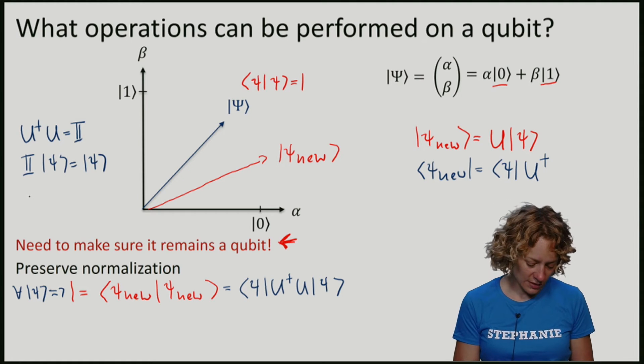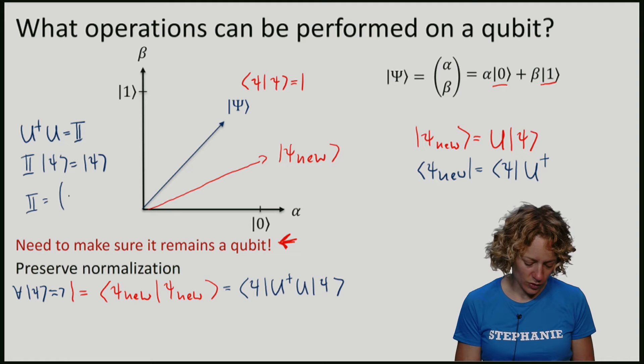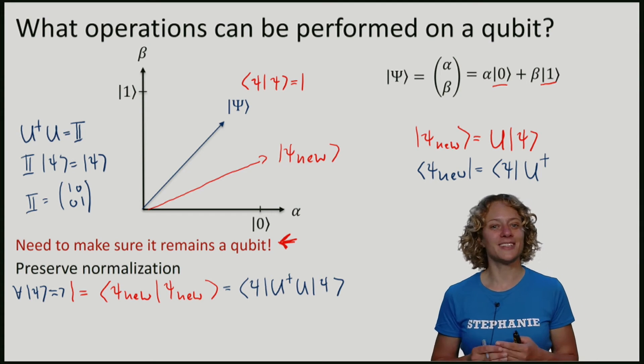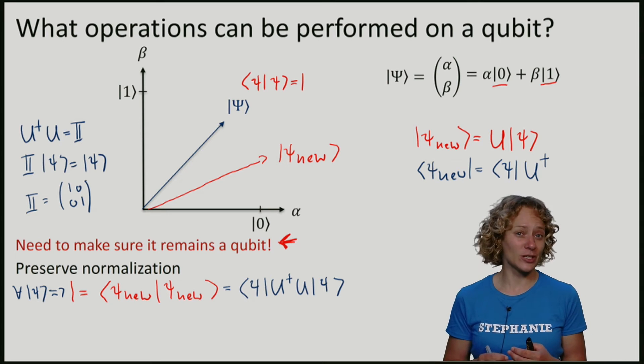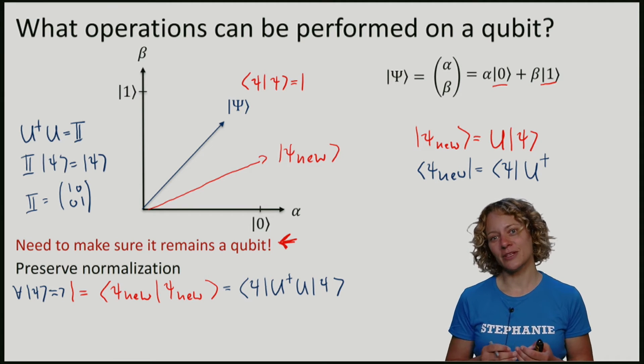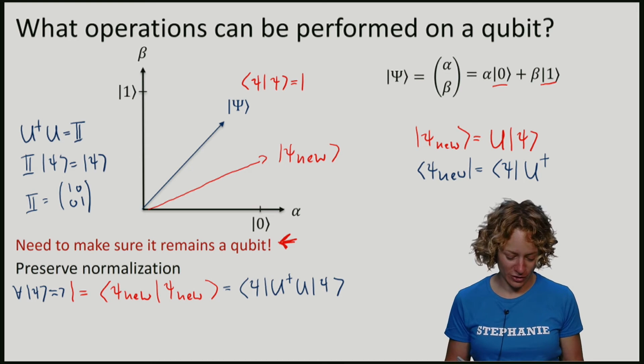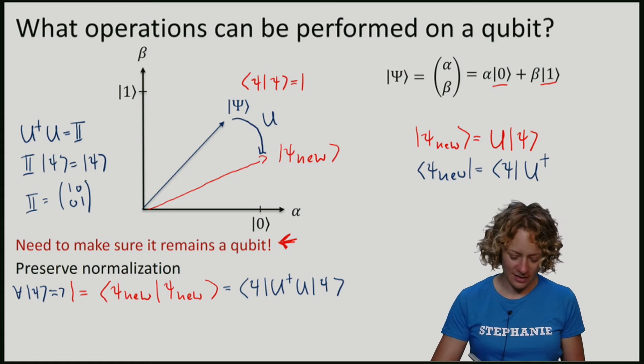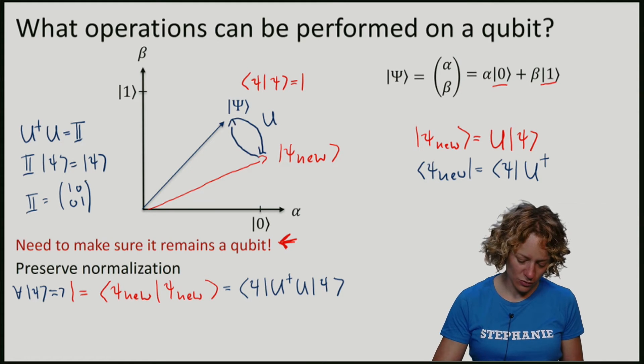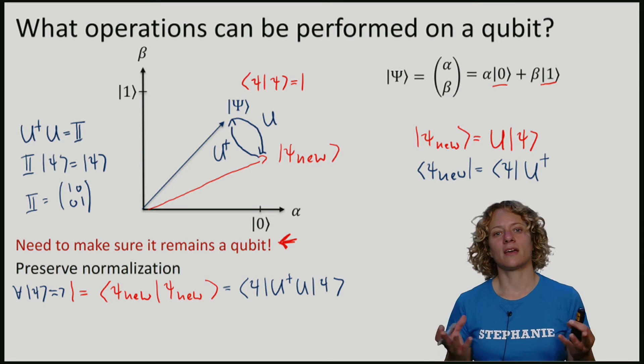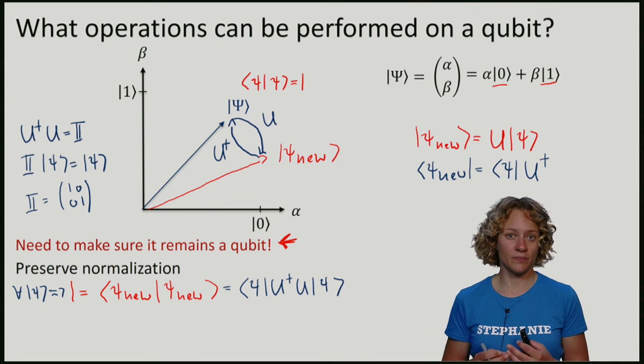The identity matrix is just this for one qubit. Note that if we write it like this, we see that this is a condition that we want our matrix U to satisfy. We also see that we could have thought of U dagger as an inverse operation. If I apply U to my vector Psi to get to the new vector, and then apply U dagger to go back, it's the same as doing nothing, applying the identity.